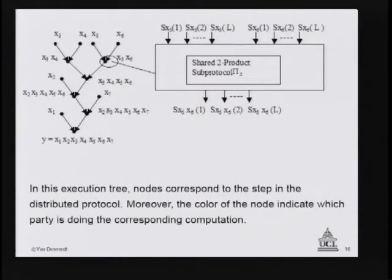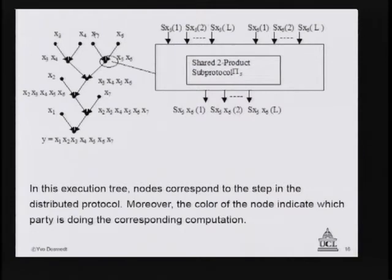Rather than spend another year looking for t=4, we tried to generalize. We write this multiplication as a tree: each leaf holds one of the secrets x1, x2, etc., and then products are taken level by level up the tree. Instead of a direct product, each party's value — say x1 for party 1, x2 for party 2 — is shared out. So x5 is input as shares into a sub-protocol, and x6 is likewise input as shares.